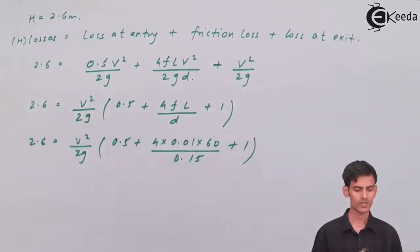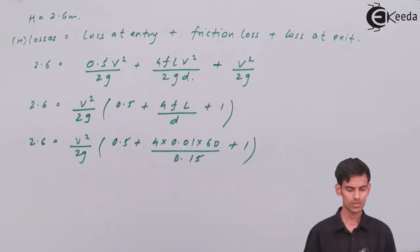We have written all the different types of losses: entrance loss is 0.5 v² / 2g, friction loss is 4fL v² / 2gd, and loss at exit is v² / 2g.